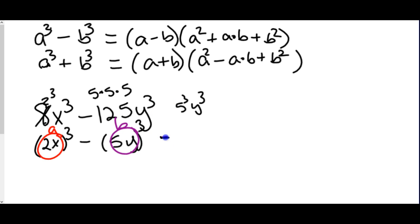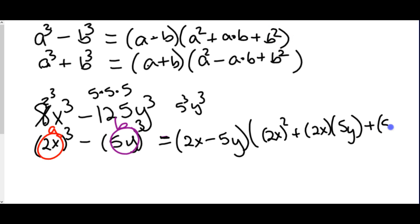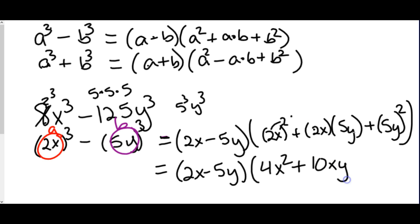Now we write out what it equals. Since it's a minus, we use the difference formula: (a - b)(a² + ab + b²). So: a = 2x, b = 5y, giving us (2x - 5y). Then a² is (2x)² = 4x², plus a times b which is 2x times 5y = 10xy, plus b² which is (5y)² = 25y². So the full factored form is (2x - 5y)(4x² + 10xy + 25y²).